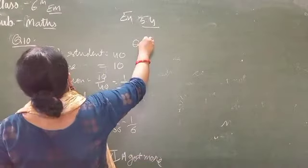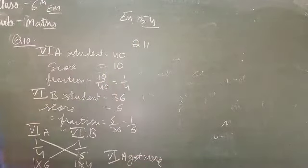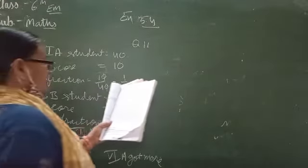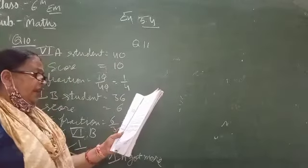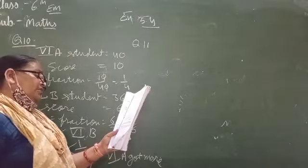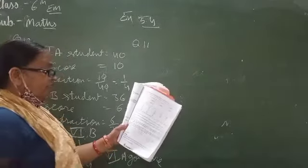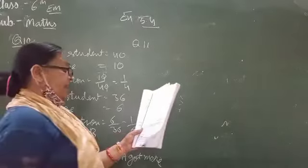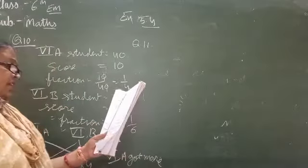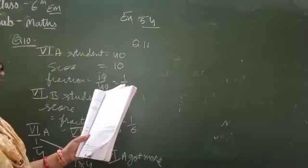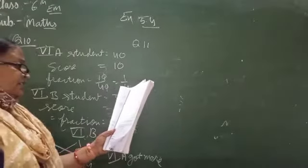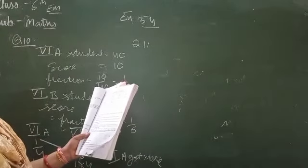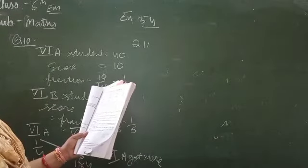Next question number 11. Isha, Priti, and Shiki each got a packet of biscuits. Their packets contain 8, 12, and 50 biscuits respectively. Isha ate 4 biscuits from her packet, Priti ate 8 biscuits, and Shiki ate 10 biscuits. What fraction did each eat?